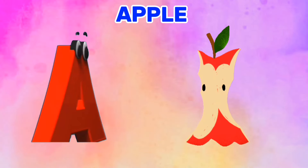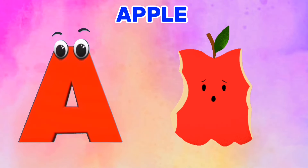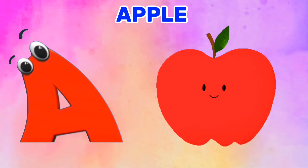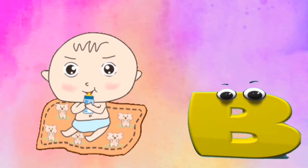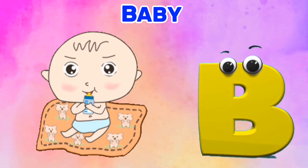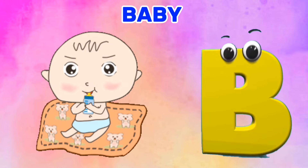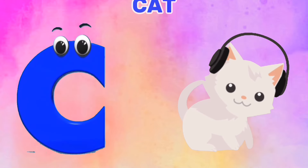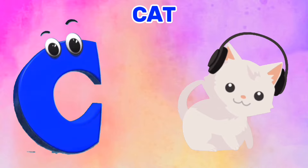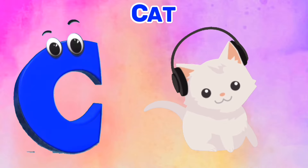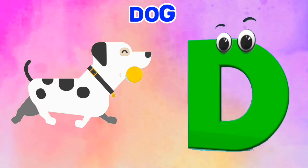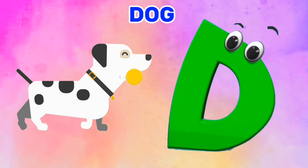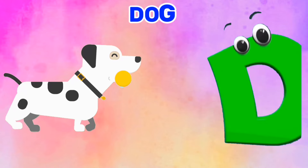A is for Apple. A, A. Apple. B is for Baby. B, B. Baby. C is for Cat. C, C. Cat. D is for Dog. D, D. Dog.